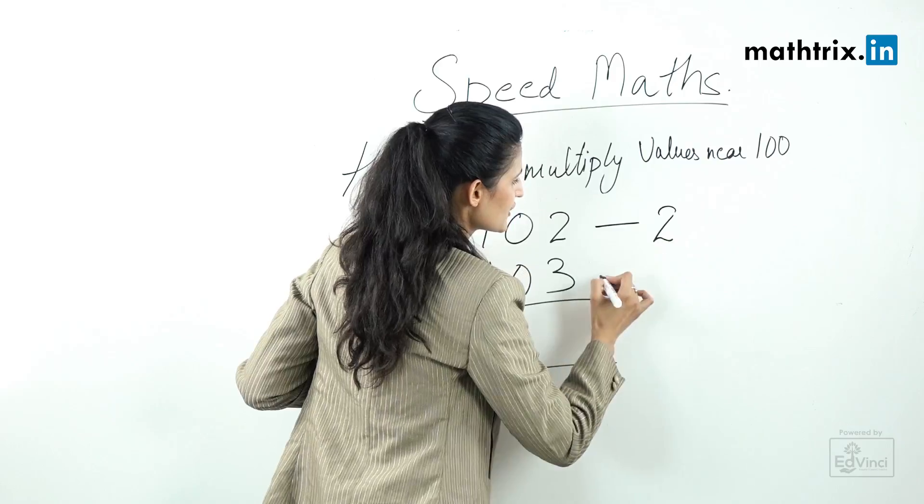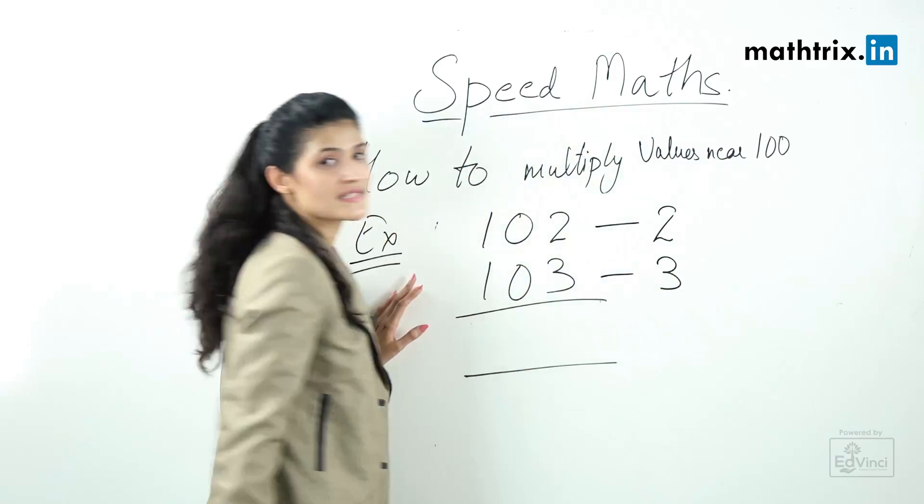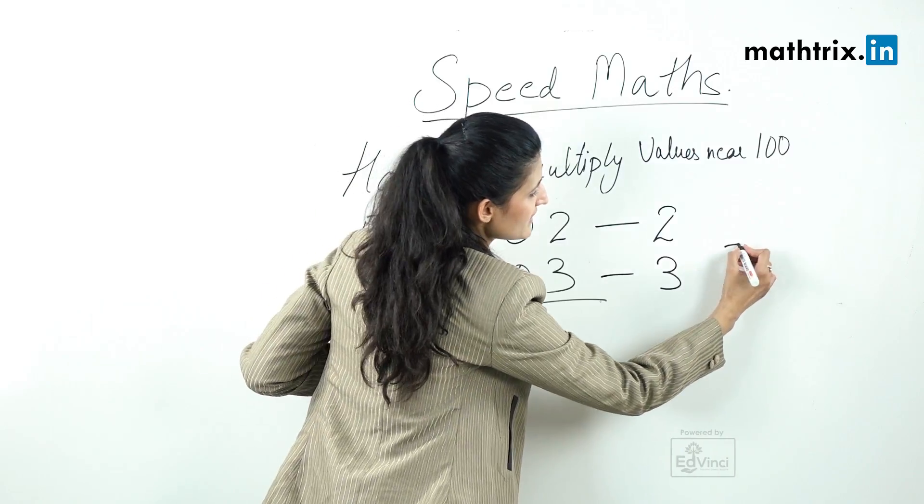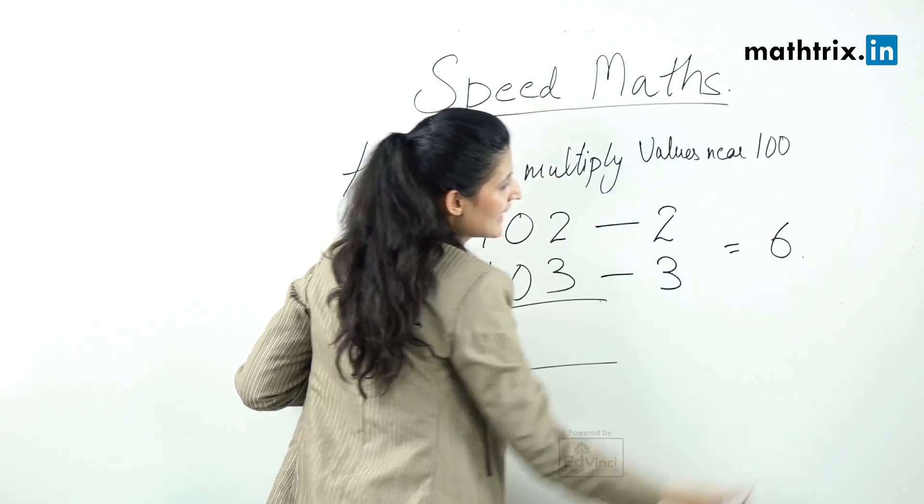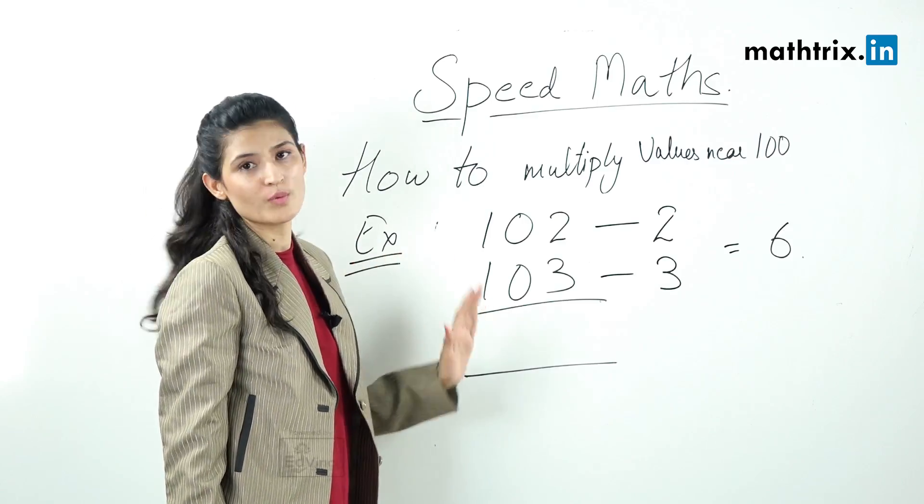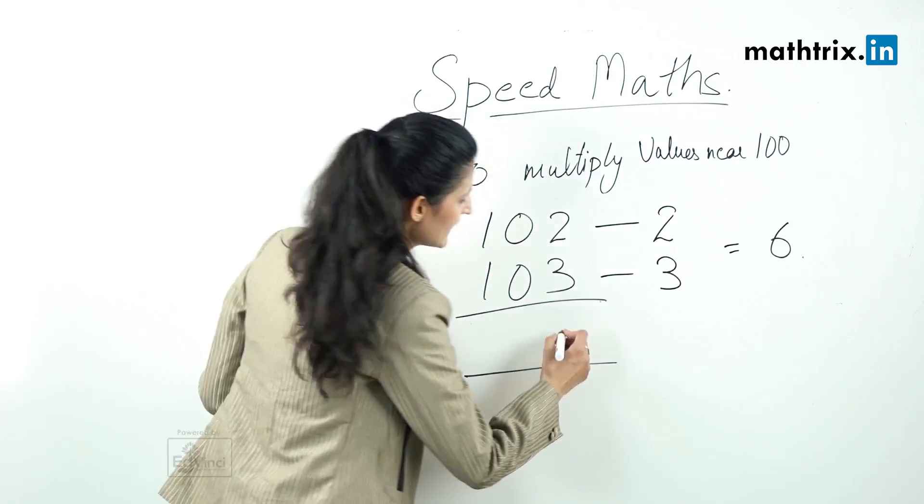Step number 2, we'll take the differences. Here it's 2, here it's 3. Step number 3, multiply the differences. When we multiply the differences, we will get 6. As 6 is a one-digit number and as per the rule, we should always put 0 before 6 while writing here for the answer.